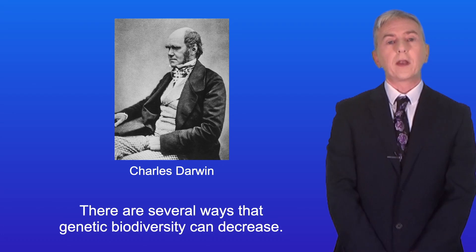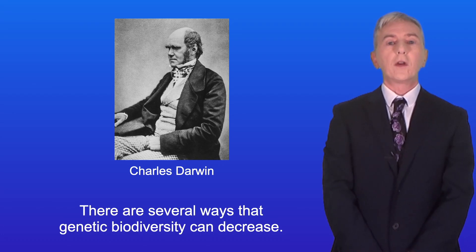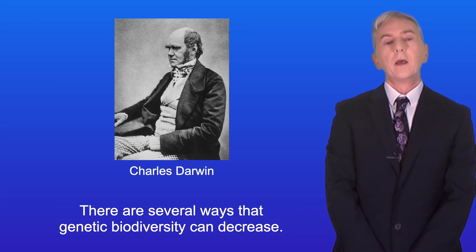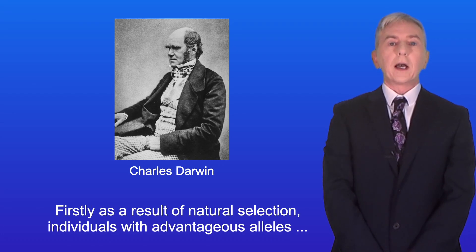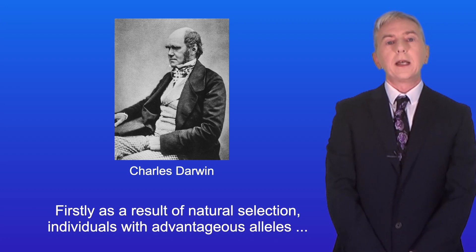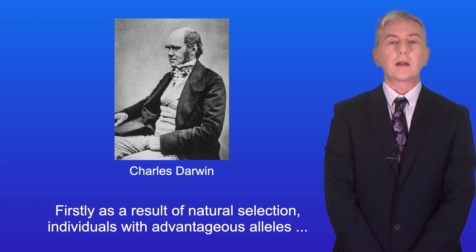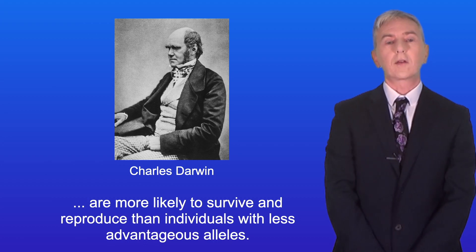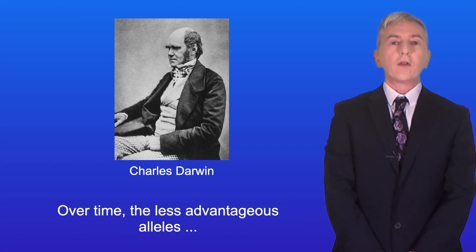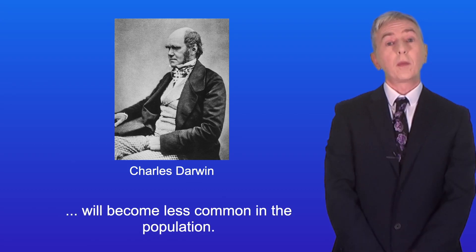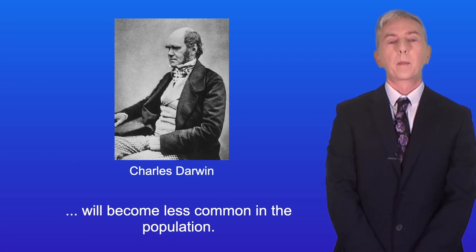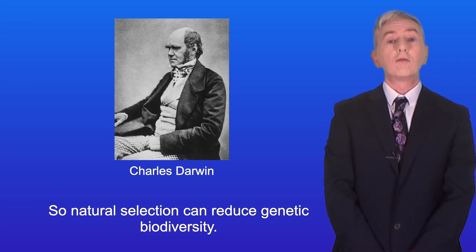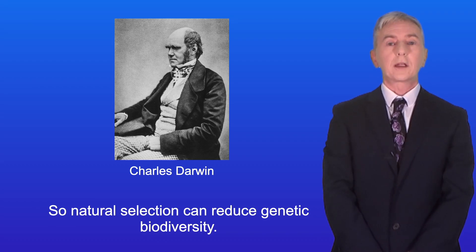There are several ways that genetic biodiversity can decrease. Firstly, as a result of natural selection, individuals with advantageous alleles are more likely to survive and reproduce than individuals with less advantageous alleles. Over time the less advantageous alleles will become less common in the population, so natural selection can reduce genetic biodiversity.